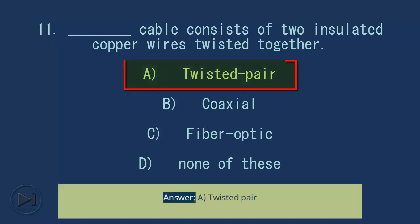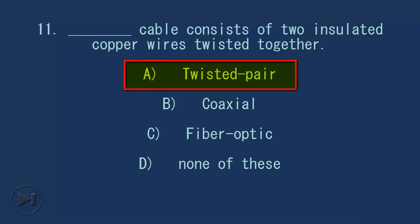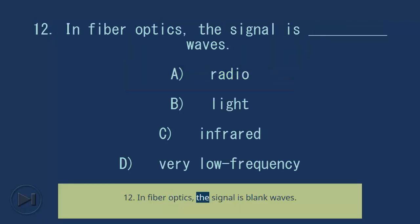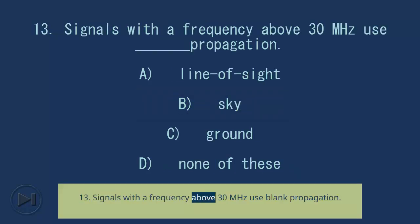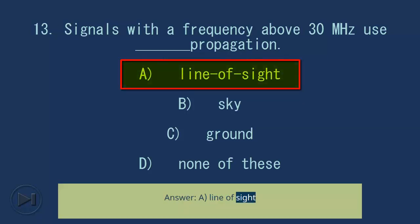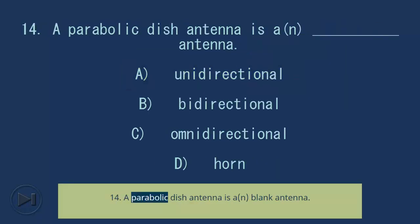Question 11: Blank cable consists of two insulated copper wires twisted together. A) twisted pair, B) coaxial, C) fiber optic, D) none of these. Answer: A, twisted pair. Question 12: In fiber optics, the signal is blank waves. A) radio, B) light, C) infrared, D) very low frequency. Answer: B, light. Question 13: Signals with a frequency above 30 megahertz use blank propagation. Answer: A, line of sight.